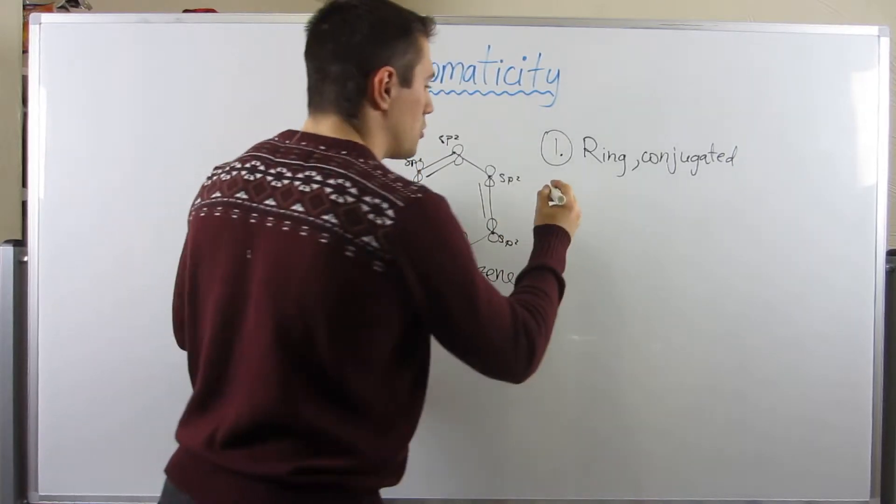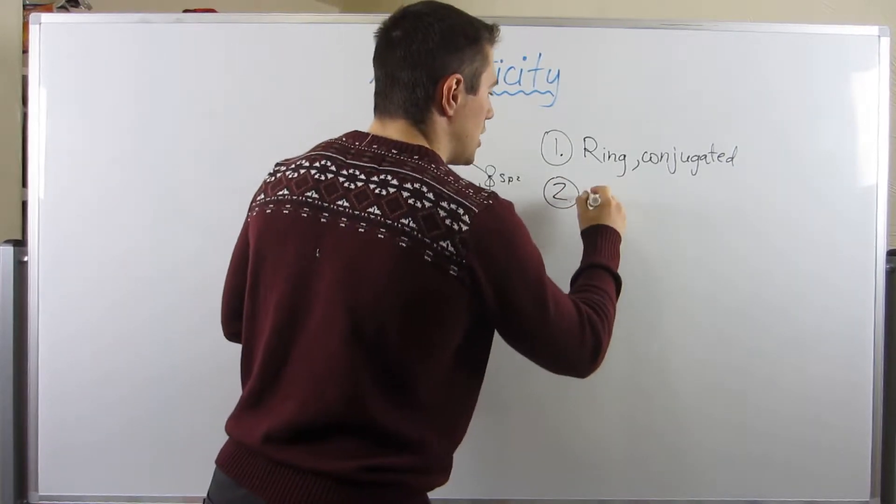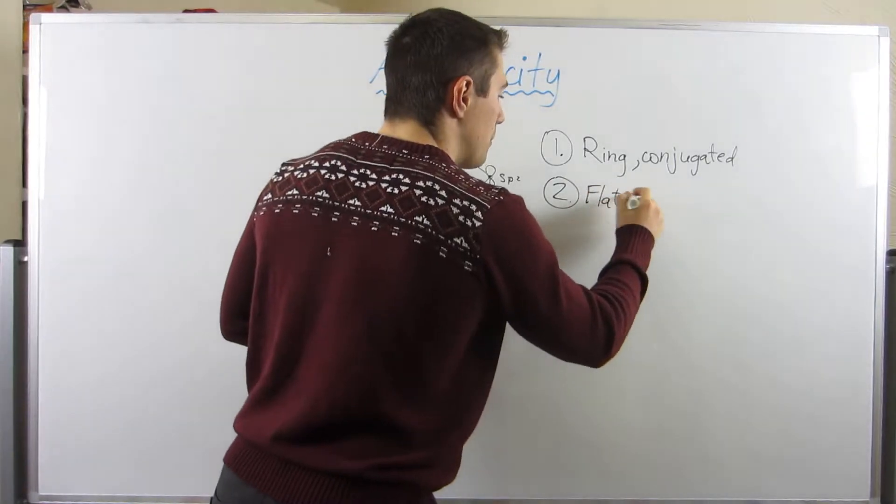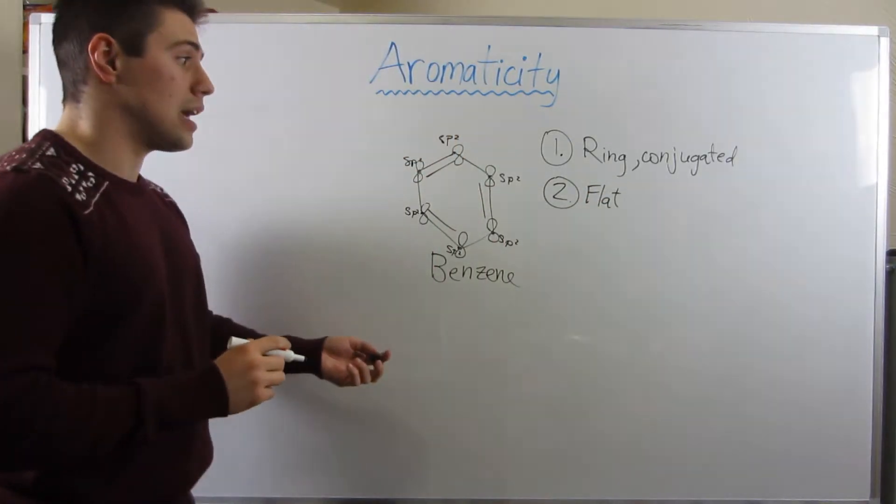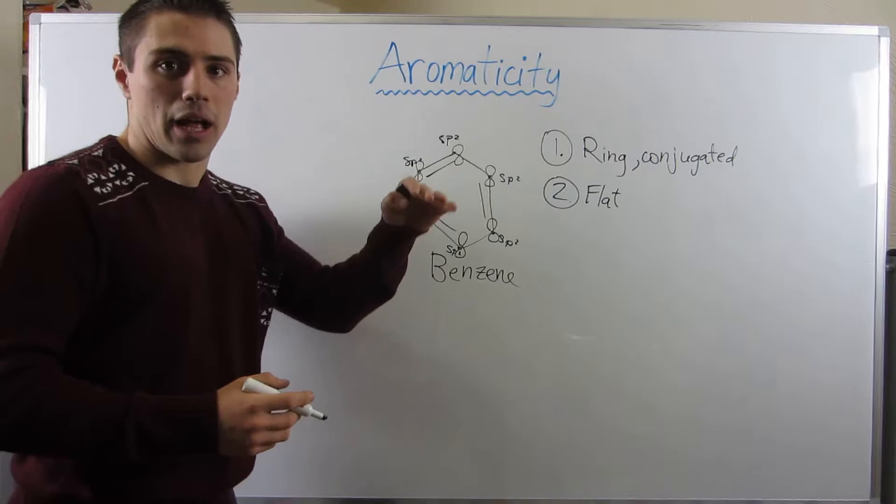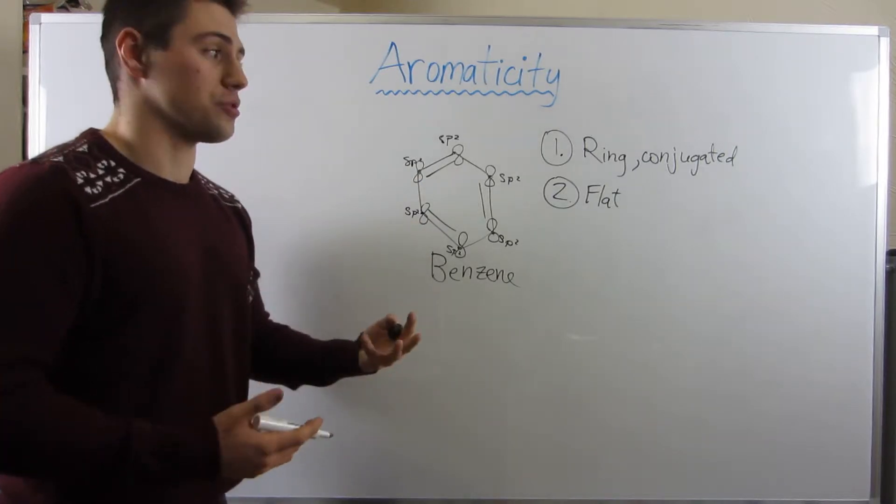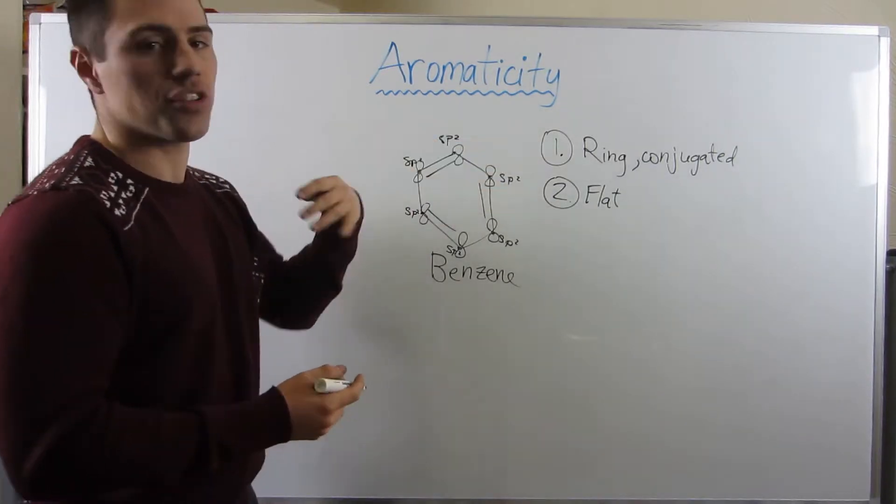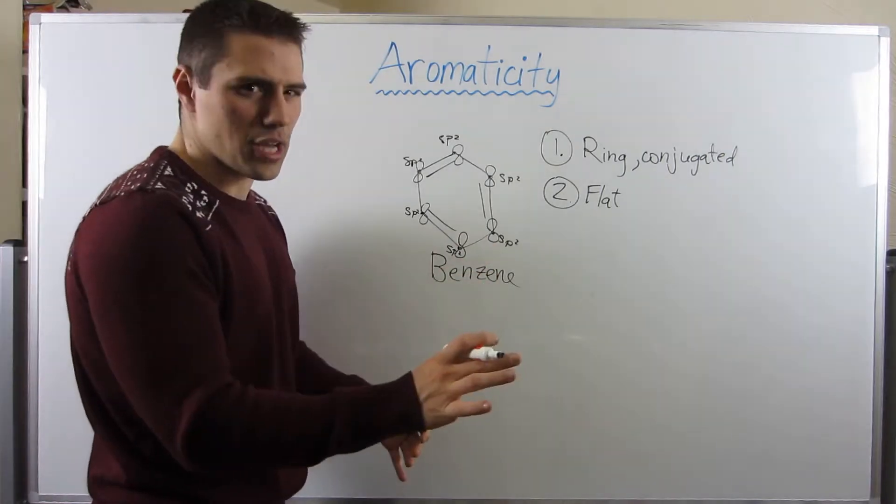The next rule is kind of a consequence of the first rule, is that you have to be flat. And remember, if you're sp2 hybridized, that means you are flat. You're trigonal planar. That is your geometry. So condition 2 is kind of a consequence of condition 1. You kind of really never have to check for 2.